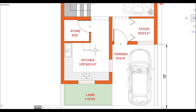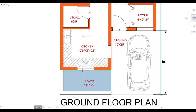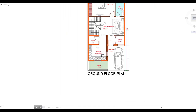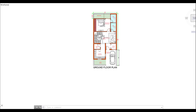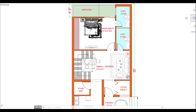Because there is no door on the kitchen, it is open and will be useful for you. You can keep your storage in the attached store room, which is 6 by 5 feet. For kitchen ventilation, I have put a window on both sides here.